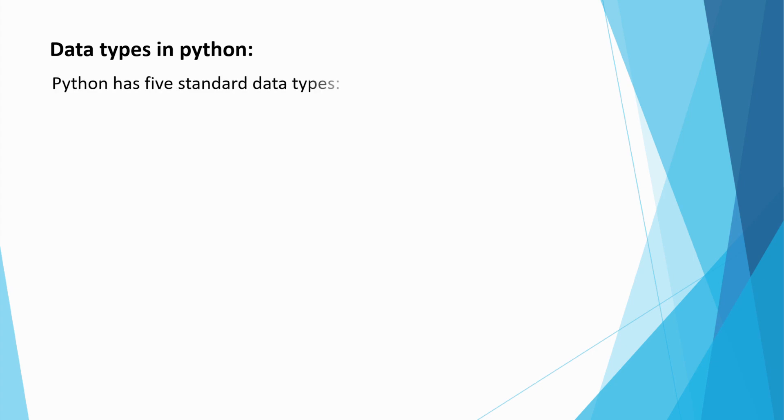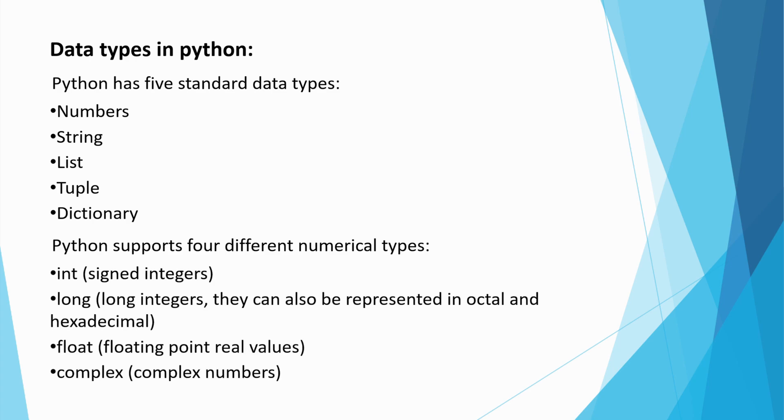Python has five standard data types: numbers, string, list, tuple and dictionary. Python supports four different numerical types: int, long, float and complex.